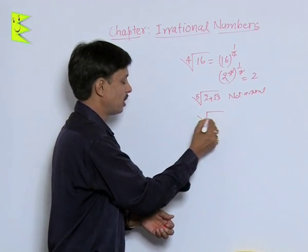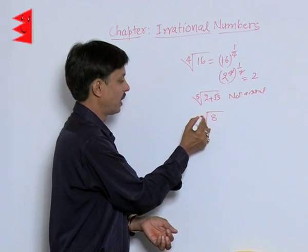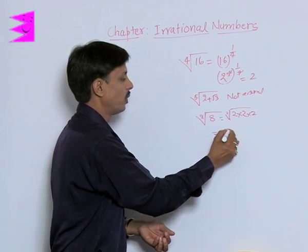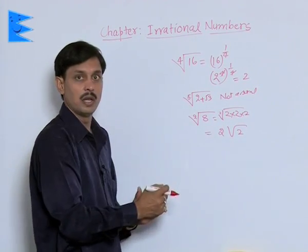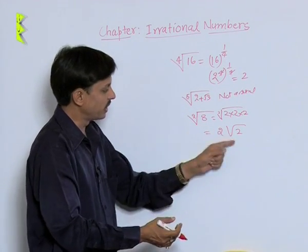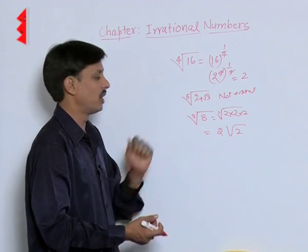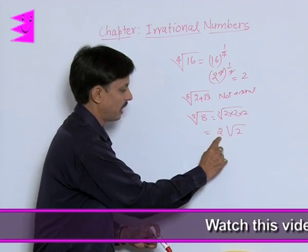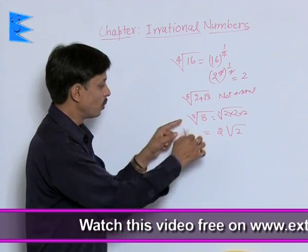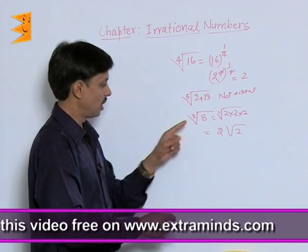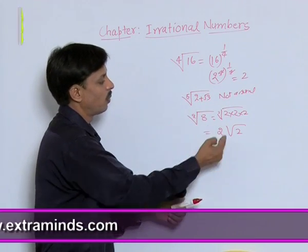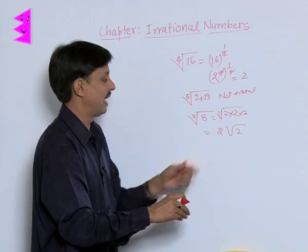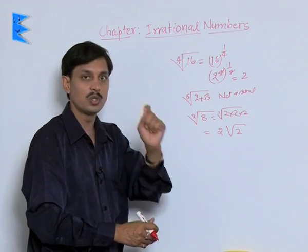If I say square root of 8, it can be written as the square root of 2 × 2 × 2, giving a value of 2√2. So it is a surd because the final answer of square root of 8 is 2√2, which is an irrational number. The radicand is rational and the order is 2. But it is not a pure surd — it is a mixed surd, since it is a product of a rational and an irrational number. This 2 is its rational part, whereas √2 is its irrational part.